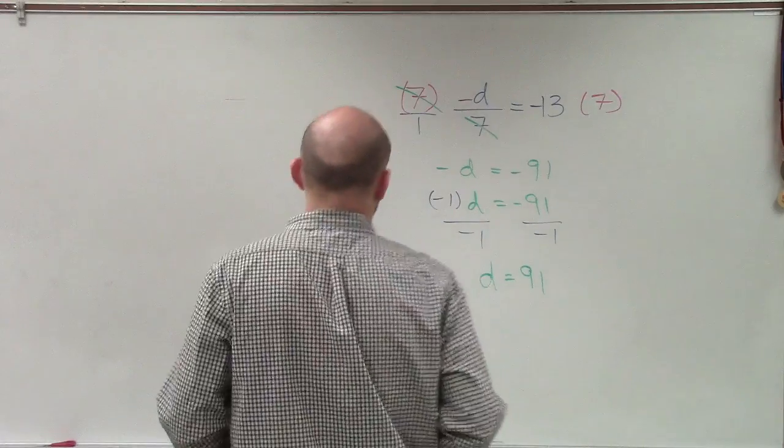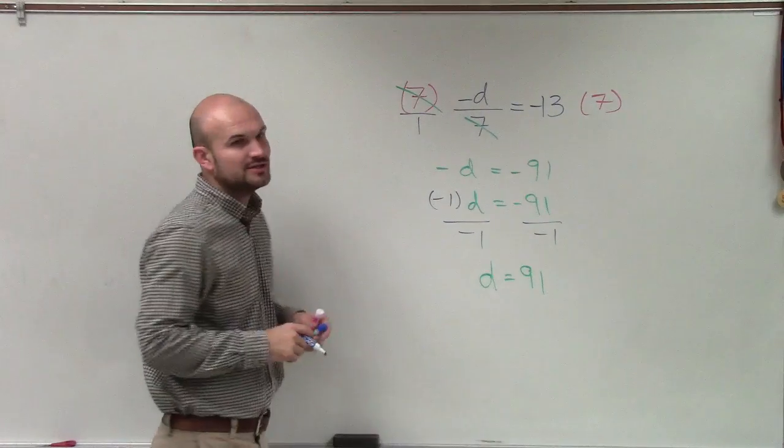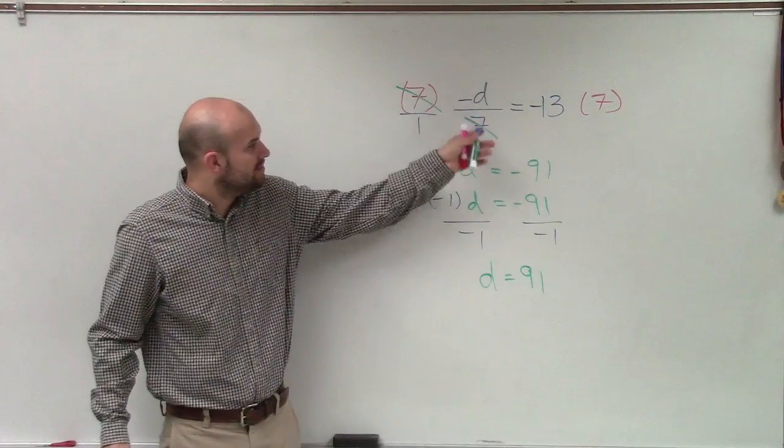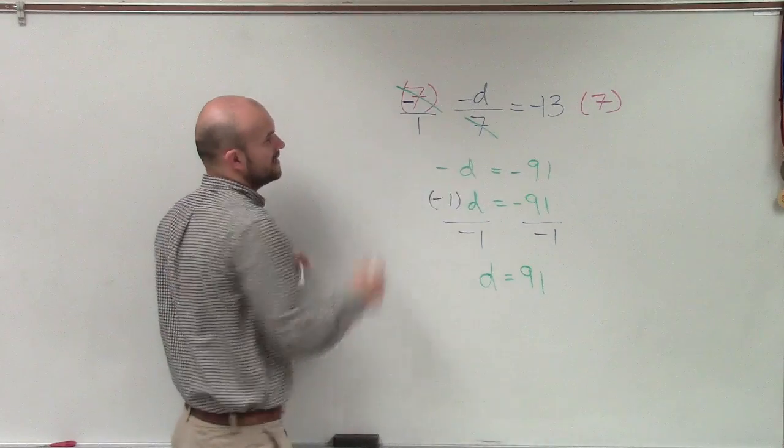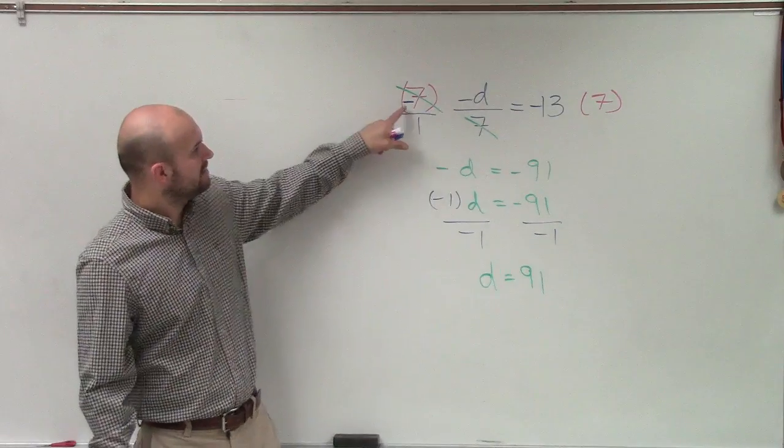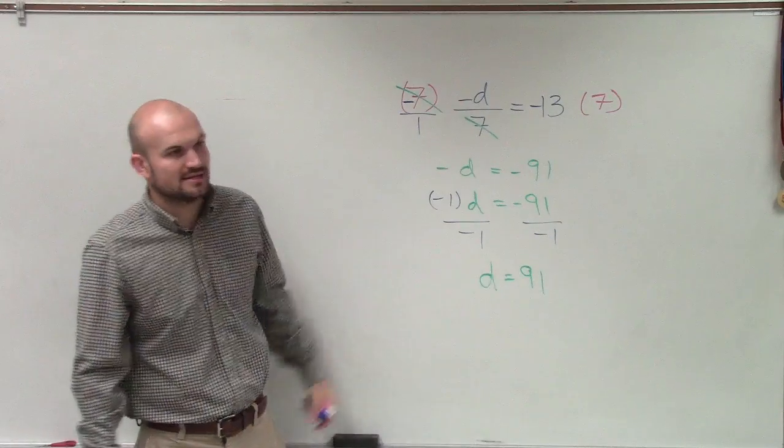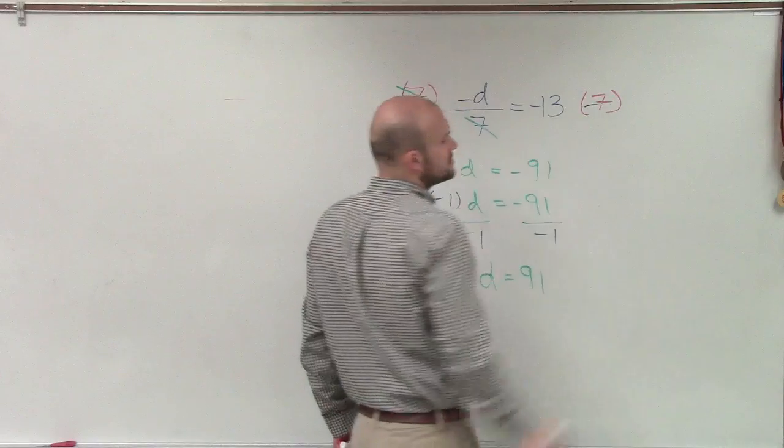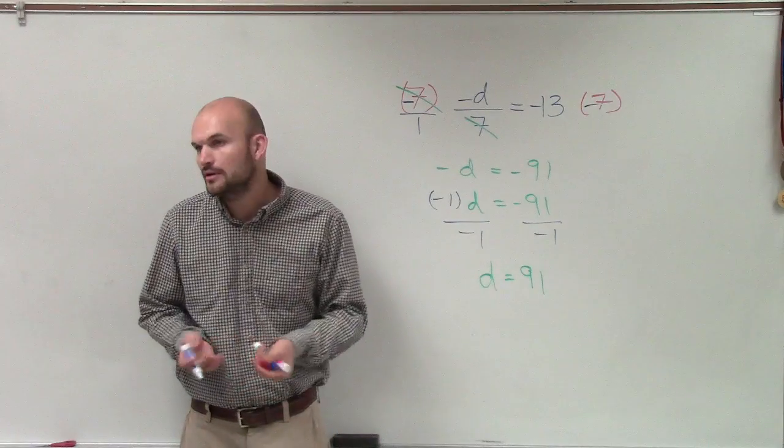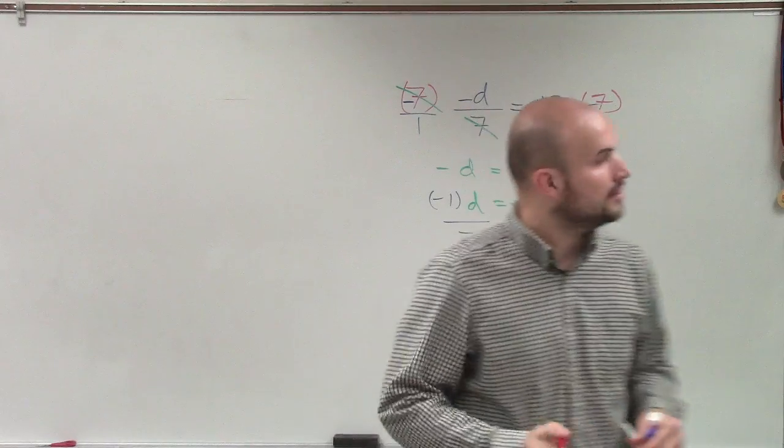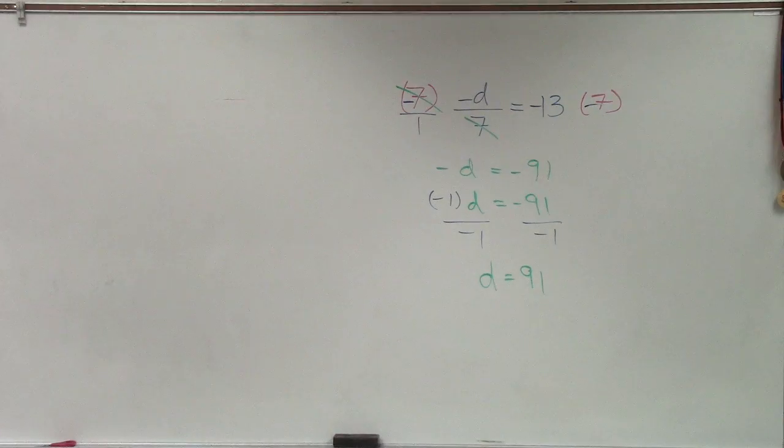Now real quick, another way to do this, rather than multiplying and then dividing, you could also just multiply by negative 7. Then the negatives would end up canceling out anyway. So if you multiply by negative 7 on both sides, you get your answer a lot quicker. But I want to kind of break down the steps for you.